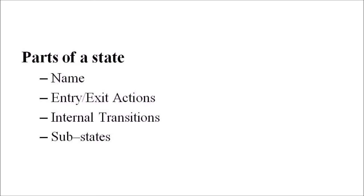Different parts of a state include: name, entry and exit action, internal transition, and substates. The term name means a string that differentiates one state from another; a state may not have any name. Entry and exit actions denote the activities performed on entering and on exiting the state. Internal transition means changes within a state that do not cause a change in the state. Substate means states within a state.